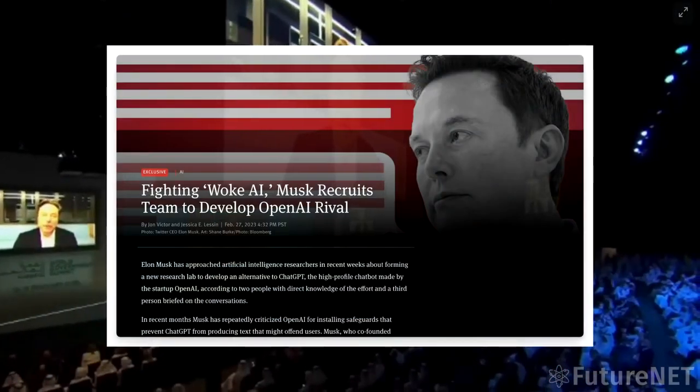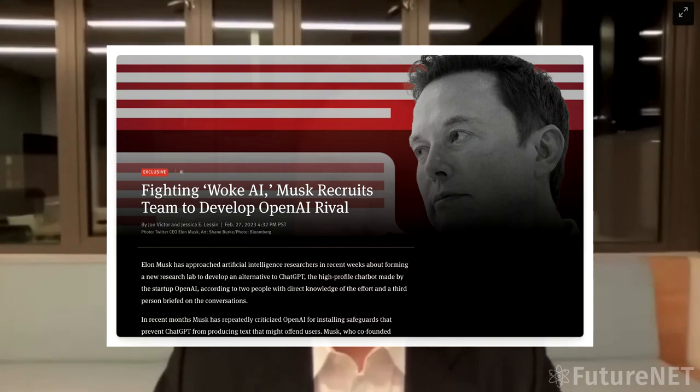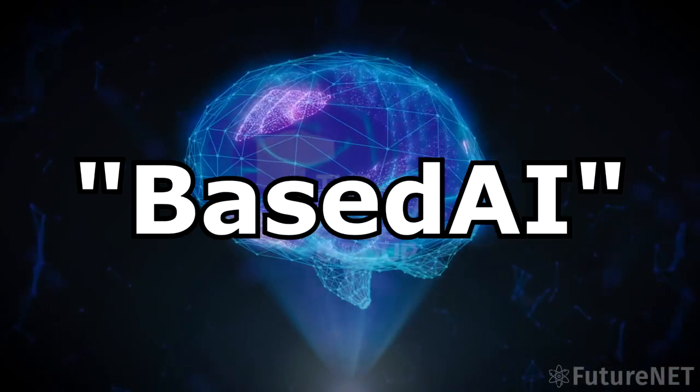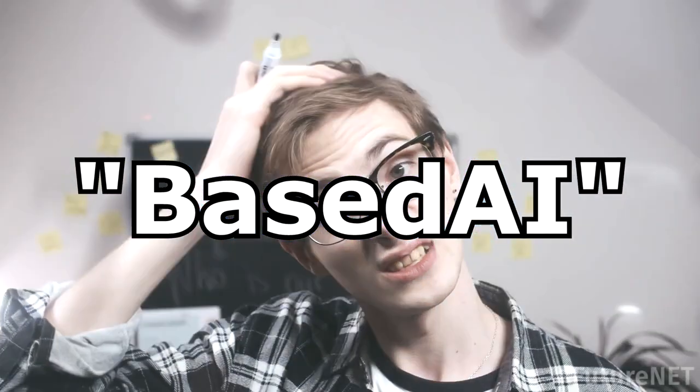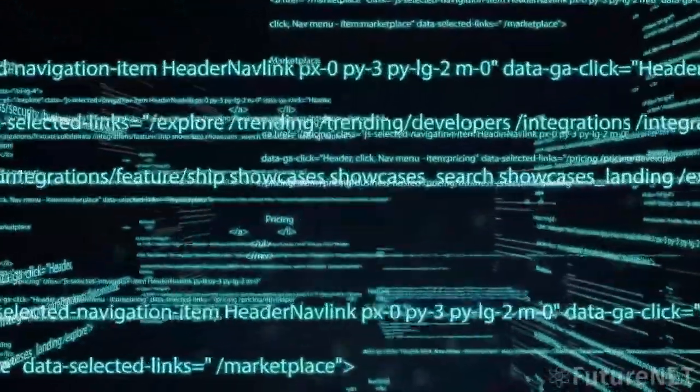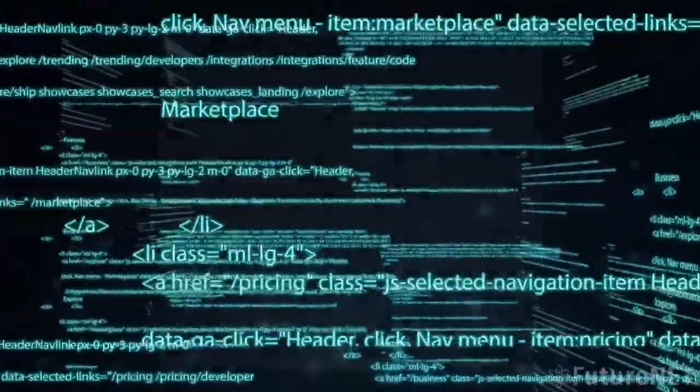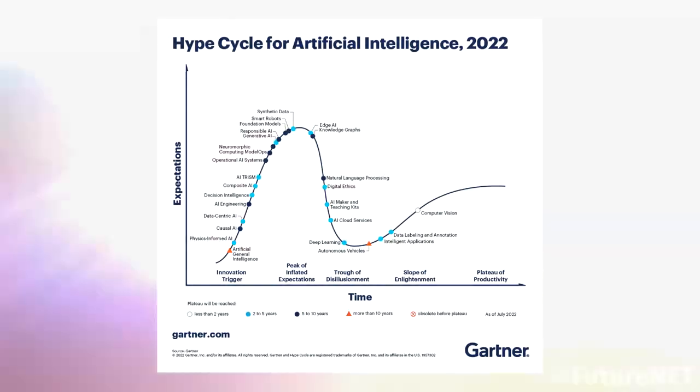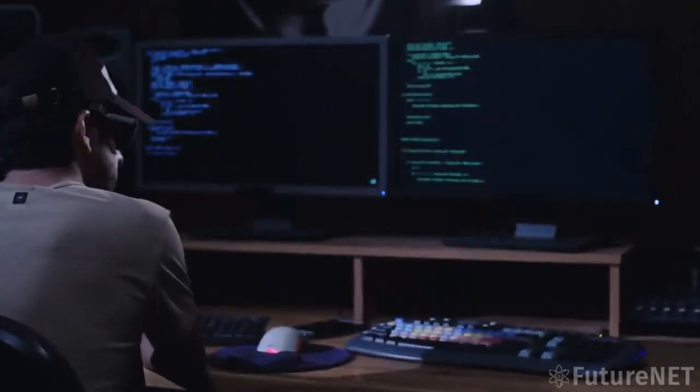Musk has called ChatGPT concerning and too woke, and now he's reportedly working on his own version of the technology called BasedAI. But what exactly does this mean for the future of AI? Will Musk's chatbot be more reliable and trustworthy, as he claims? Or will it just be another hype cycle? As some experts predict, let's dive into the details and find out.